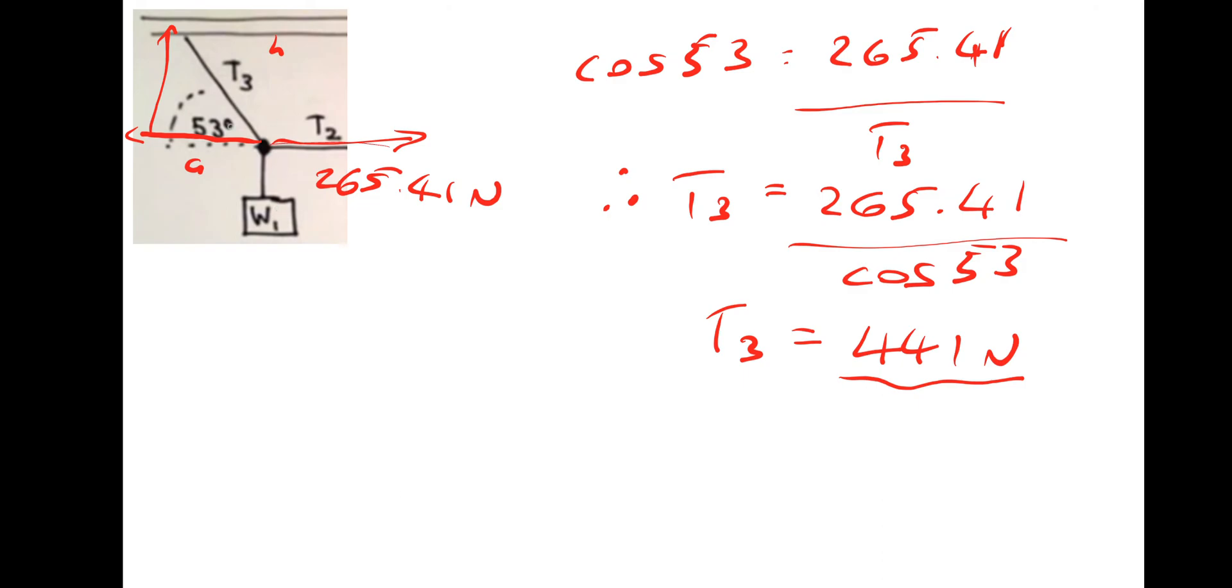So what's left to find. W1. So if we can find W1 acting down must be equal to the vertical component of T3 which would also be W1. So we just need to do trigonometry again to find that. So we need the opposite and we have the, we'll use the adjacent. So tan theta.